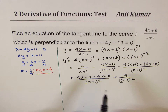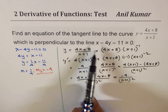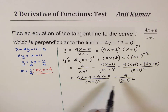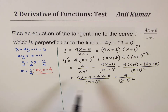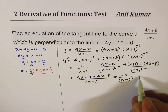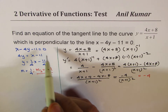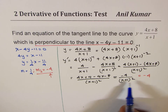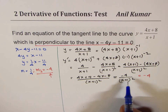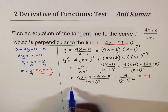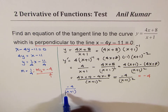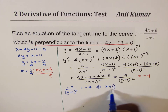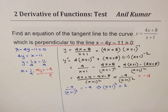Now we need to find the equation of the tangent line perpendicular to that line, so we set the derivative equal to minus 4. We equate minus 4 over (x plus 1) squared equals minus 4. Dividing both sides by minus 4, this implies that (x plus 1) squared equals 1.